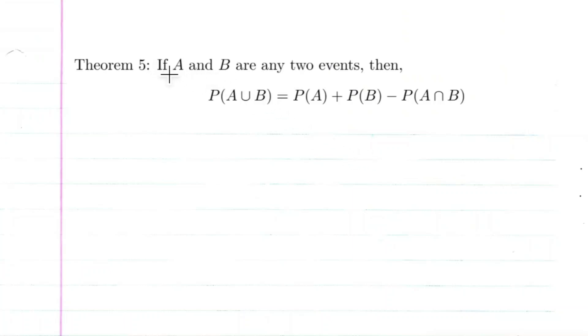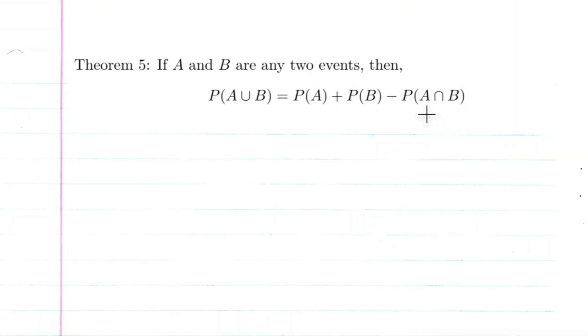We're going to prove that if A and B are any two events, then the probability of A union B is equal to the probability of A plus the probability of B minus the probability of A intersection B. Let's go ahead and draw a picture illustrating what's going on here.